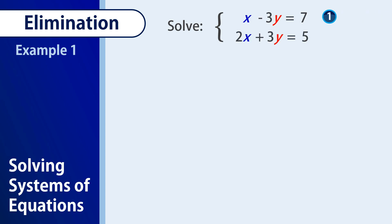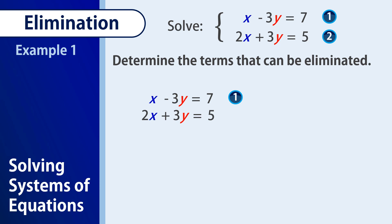Our example are the equations x minus 3y equals 7, 2x plus 3y equals 5. And you see, are there any terms we can eliminate? When we say can be eliminated, these are the identical terms. Of course, they can have different signs. In this case, we have negative 3y and positive 3y. So what do we do? By addition...